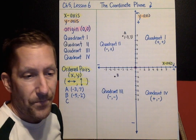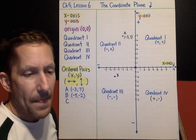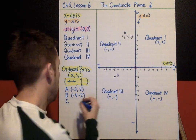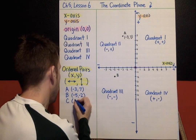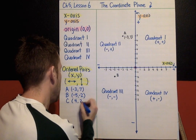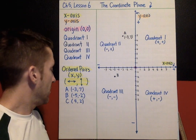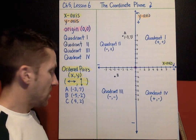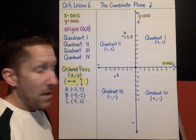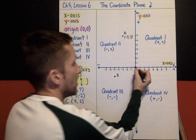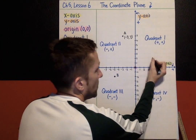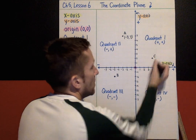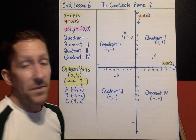Point C: four, comma, two. Positive x-coordinate four, positive y-coordinate two. Start at the origin — one, two, three, four, up two — there's where C belongs.